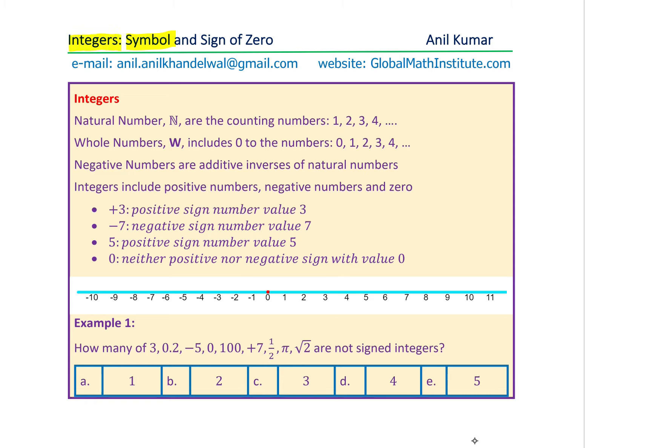The bold Z is normally used. However, there is a lot of confusion about when to include 0, when not to include 0, how about non-negative integers, how about the positive integers. That gives a bit of complexity in the usage of the symbol for integers.